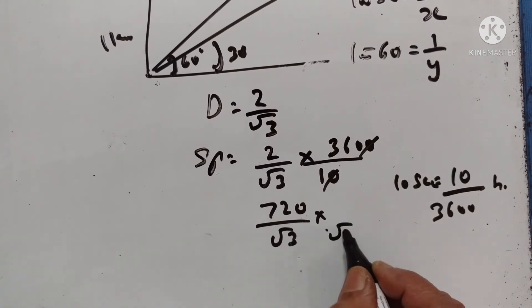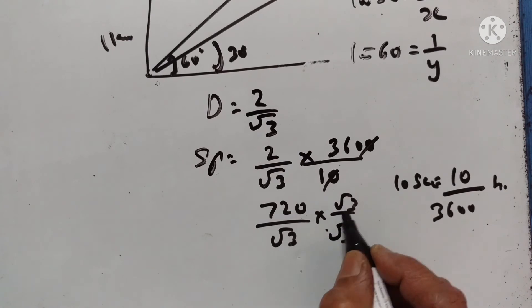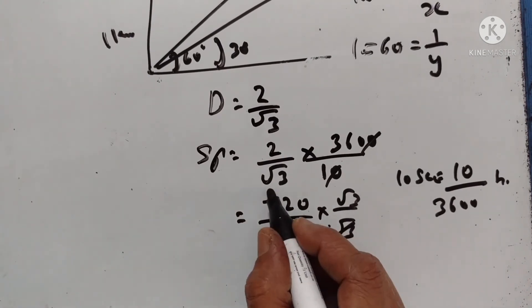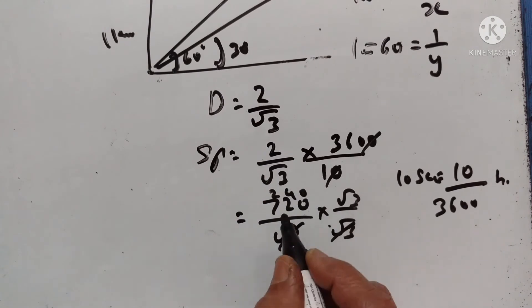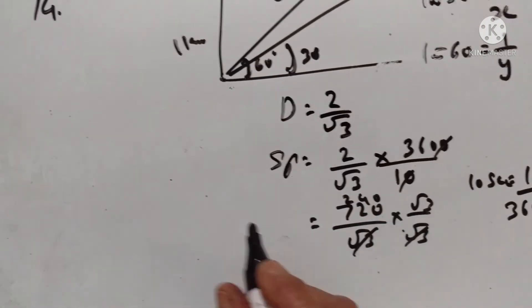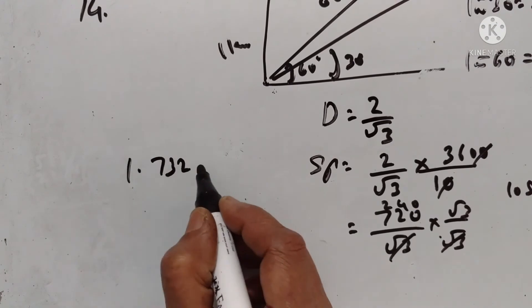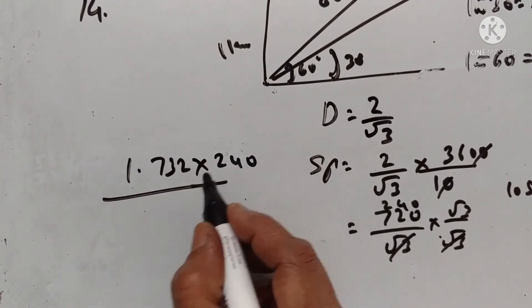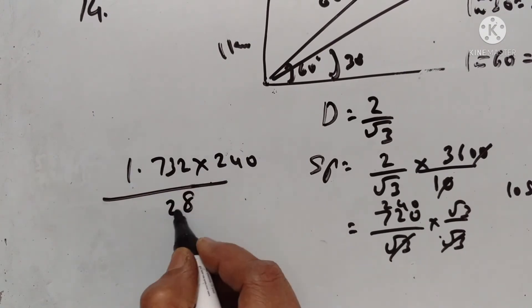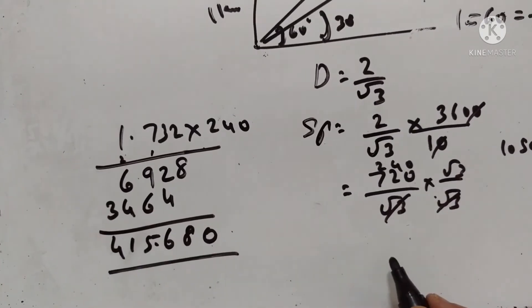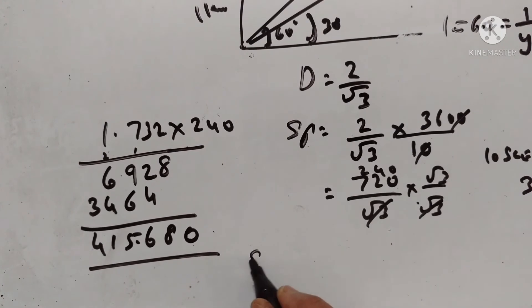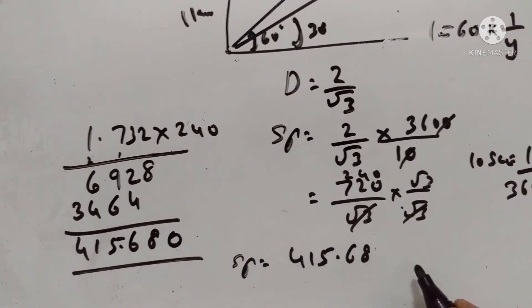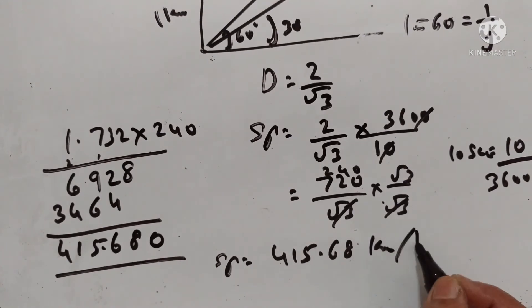Rationalizing the denominator, this becomes 3. So 720 times square root of 3 divided by 3 gives 240 times square root of 3. Using 1.732 times 240, the speed of the aeroplane is equal to 415.68 kilometers per hour.